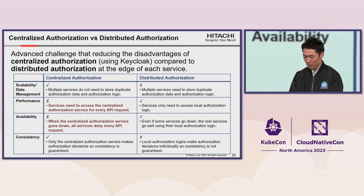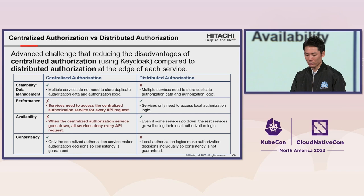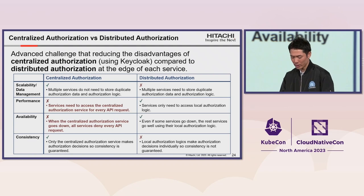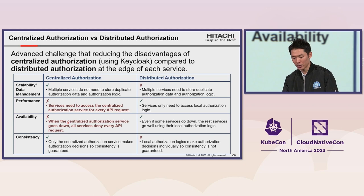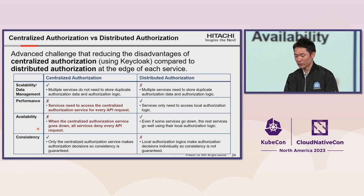However, when performing centralized authorization with Keycloak, this comparison is somewhat different. Because Keycloak is a member of the CNCF family and can be deployed in the same Kubernetes cluster as a service, performance delays due to communication are reduced. Also, by scaling Keycloak instances and making it a high-availability configuration, we can reduce the risk of a single point of failure.